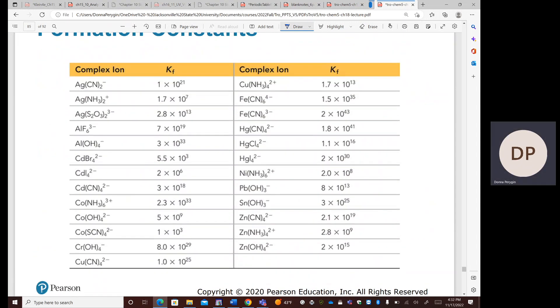The formation constants, as you can see, for these various complexes, are generally very large. They're on the order of something much larger than one. Here's one of our smaller ones at 10 to the third. Here we have 10 to the 29, 10 to the 25th. So these complexes form, and generally the complex formation is favorable, and the reaction will generally lie to the right.